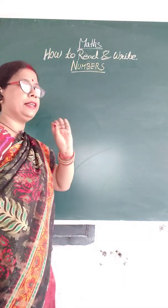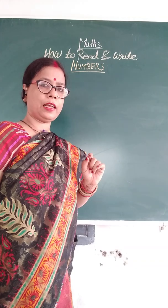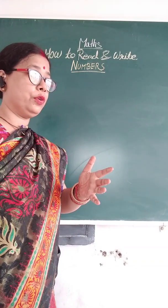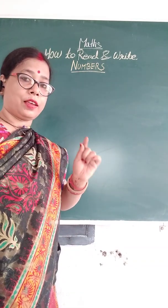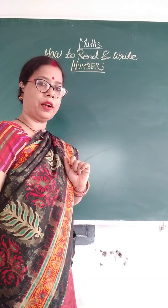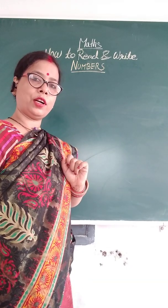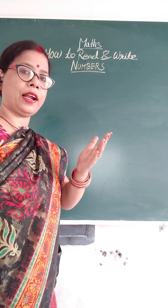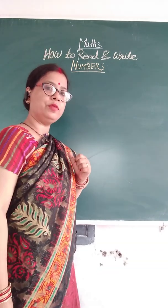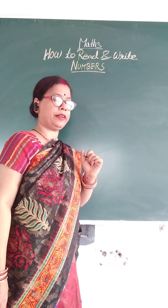Any digit, any counting number — for example, 1, 2, 3, 4, 5, 6. All of you know natural numbers and whole numbers. Natural numbers always start from 1, 2, 3, 4, 5 till infinite, and whole numbers always start from 0, 1, 2, 3, 4, 5 till infinite.